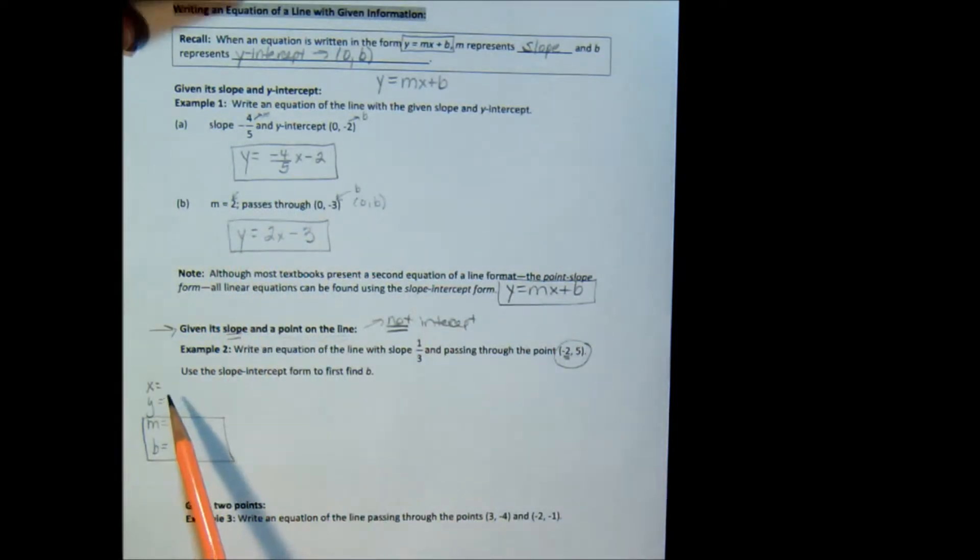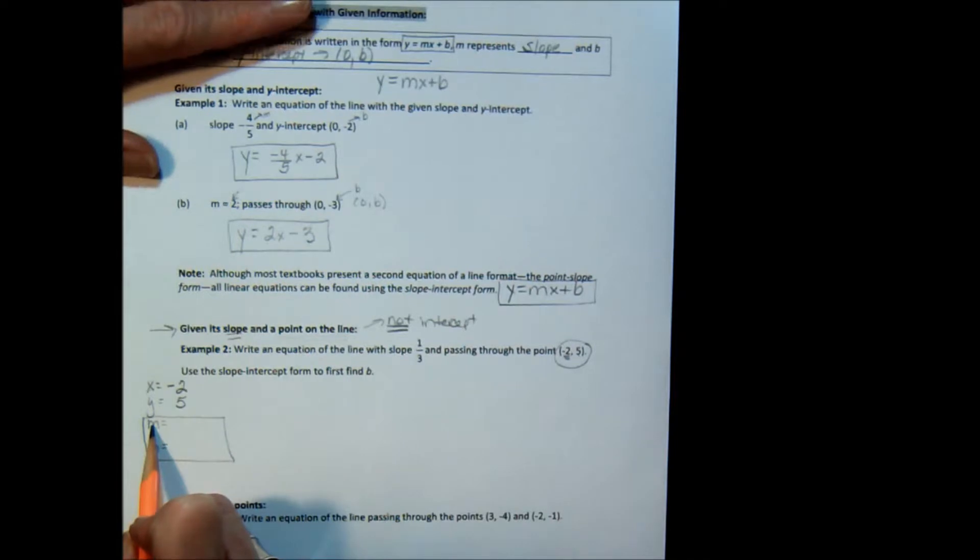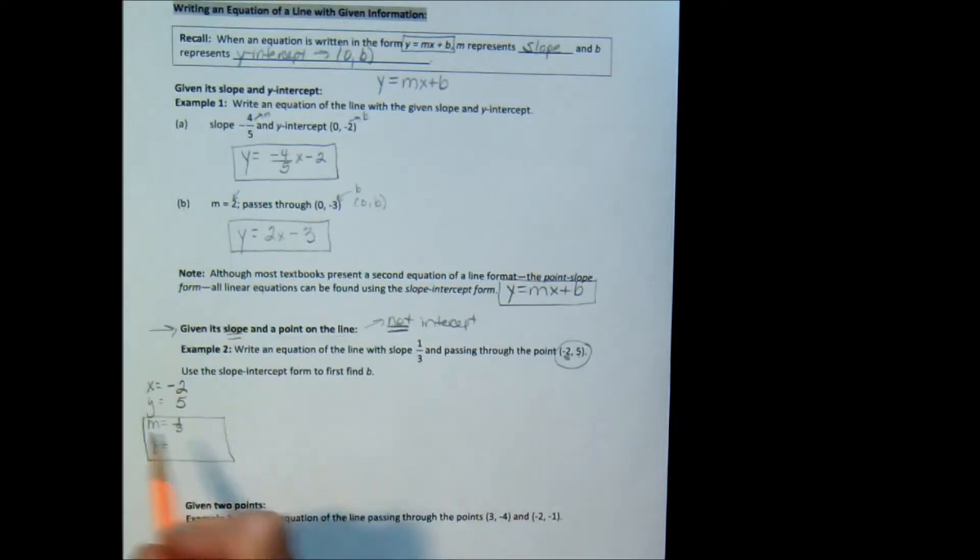So let's look at what we're given. We're given an x as negative 2, so I'm going to fill that in. We're given a y, which is 5. I'm going to fill that in. We got that from our point. And we're given the slope m, which in this case is 1 3rd. Now, we're going to use these three pieces, x, y, and m, to solve for the piece we don't have, which is b.